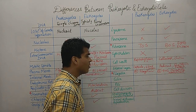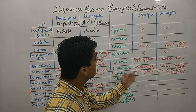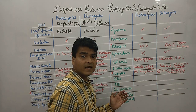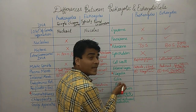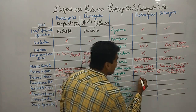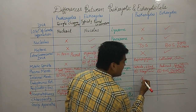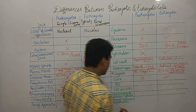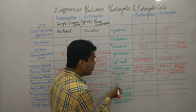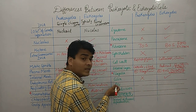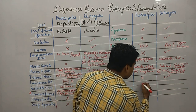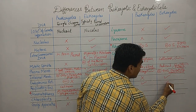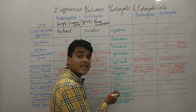Cilia are absent in prokaryotes and present in eukaryotes. Pili are present in prokaryotes and absent in eukaryotes.